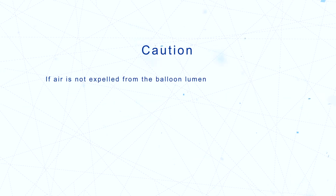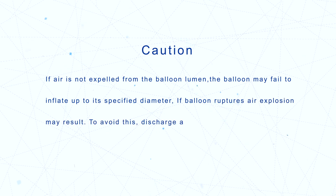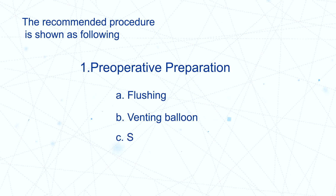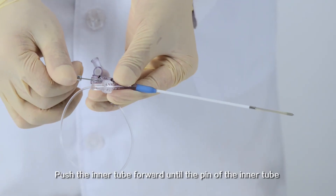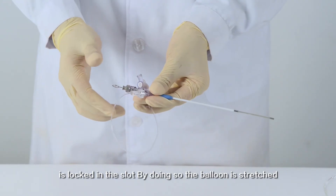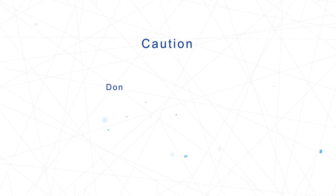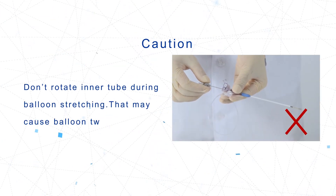If air is not expelled from the balloon lumen, the balloon may fail to inflate up to its specified diameter. If the balloon ruptures, air explosion may result. To avoid this, discharge air from the balloon lumen completely. Next, stretch the balloon by pushing the inner tube forward until the pin of the inner tube is locked in the slot, so that the balloon is stretched. Do not rotate the inner tube during balloon stretching, as that may cause the balloon to twist.